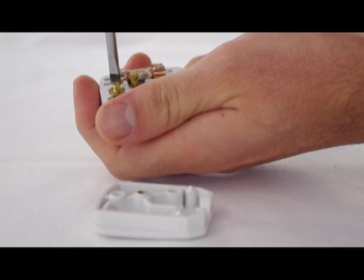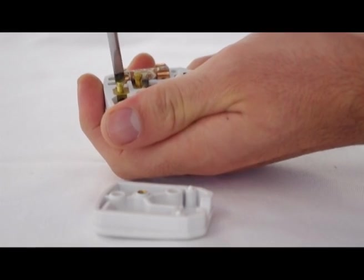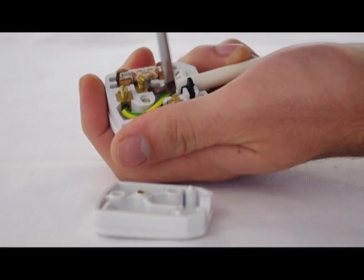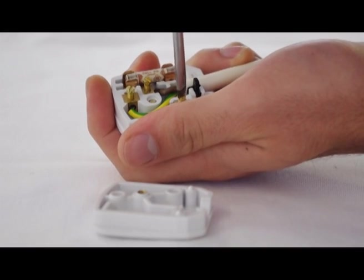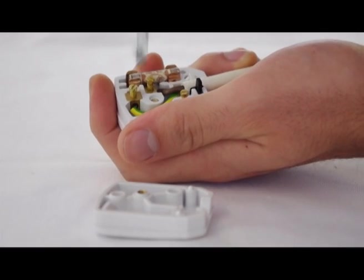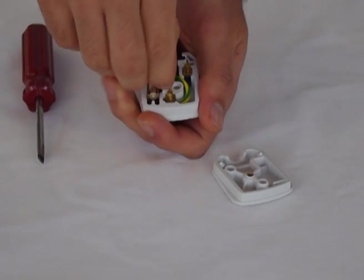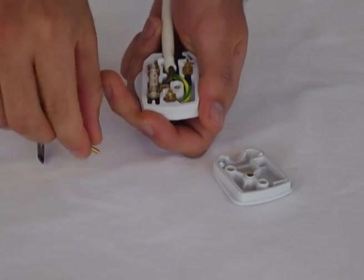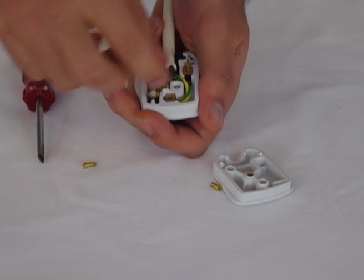What you're going to do is simply remove them with a screwdriver. As you can see here I've already half loosened them just to make the process a bit easier. Once you've got the screws pretty much out of the holes, use your fingers to pop them out. That's one, two and there's the last one.